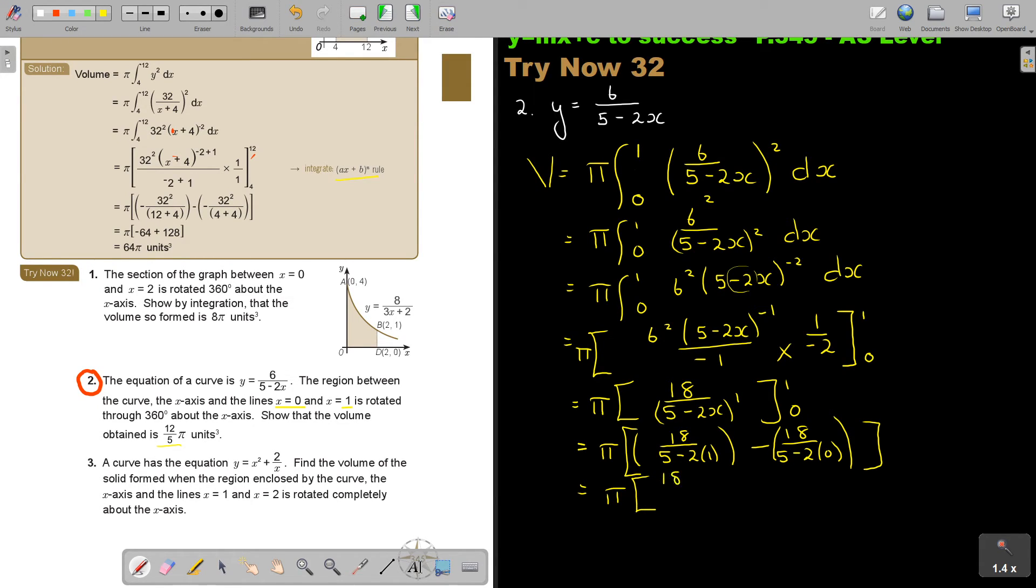And this is going to be 18, 5 minus 2 is 3. Minus 18, 5 minus 0 is just going to be 5. And now I can finish it off by pressing it on my calculator.